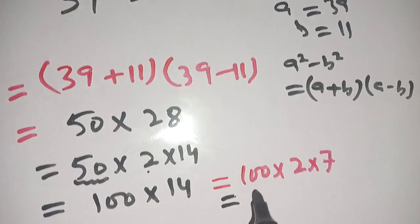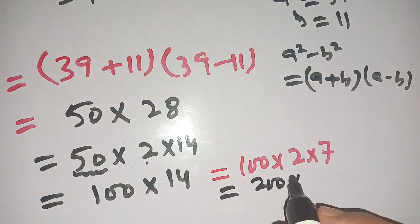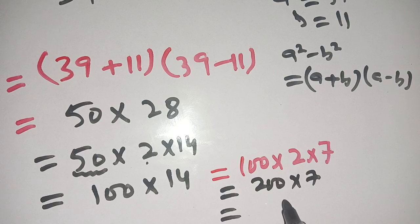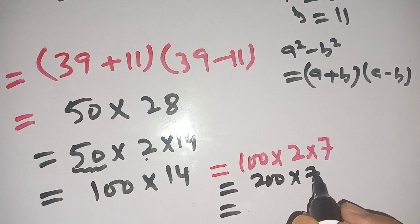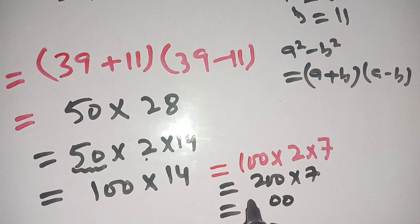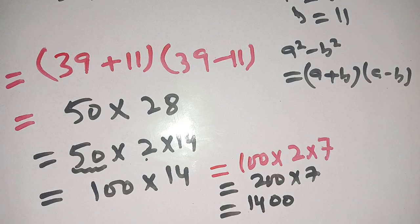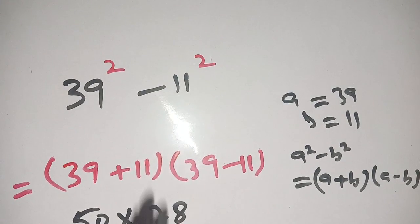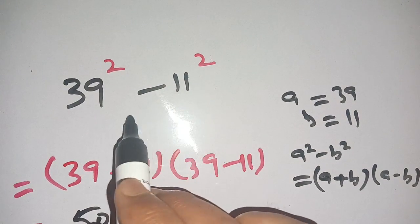Now we multiply 200 by 7, it becomes 7 times 0 is 0, 7 times 0 is 0, 7 times 2 is 14. Thus our final answer is 1400, which means that 39 squared minus 11 squared is equal to 1400.